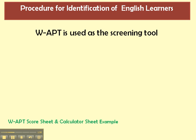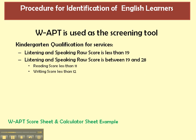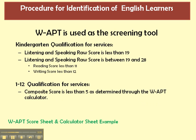There is a WAPT test that is used as a screening tool, and we're going to talk more about that later in the PowerPoint. There are certain scores for qualification in kindergarten: if the listening and speaking raw score is less than 19, they qualify. If the listening and speaking raw score is between 19 and 28, and the reading score is less than 11 or the writing score is less than 12, they would qualify. For grades 1 to 12, if the composite score is less than 5, as determined by the WAPT calculator, they qualify.